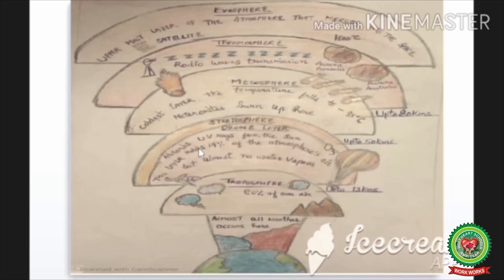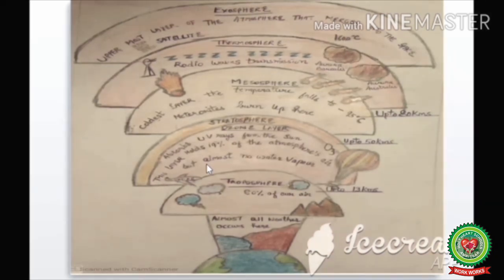After the troposphere, the next layer is the stratosphere, where the ozone layer is present. It absorbs the UV rays of the sun and keeps our Earth suitable for living. 90% of air is present here, but with almost zero water vapor. It extends up to a height of 30 kilometers and is a calm layer, good for airplane flying.